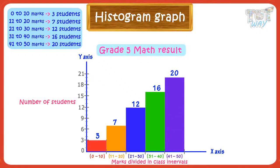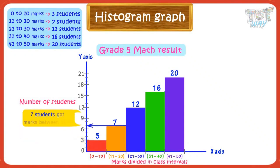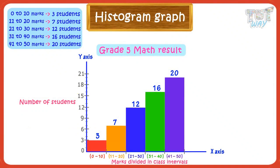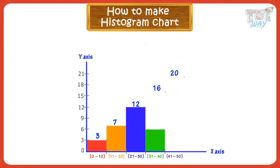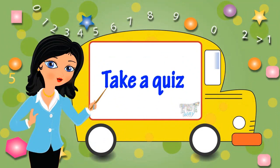We can read our histogram like: 3 students got marks in the range of 0 to 10, 7 students got marks in the range of 11 to 20, and so on. So kids, today we learned what a histogram is, how to make it, and how to read it. Now you may go ahead and take a quiz to learn more. Bye-bye!